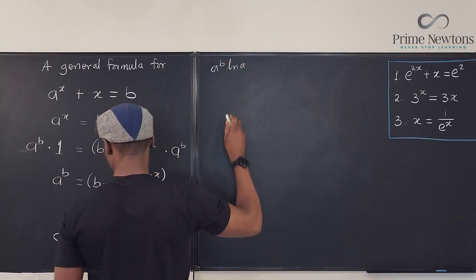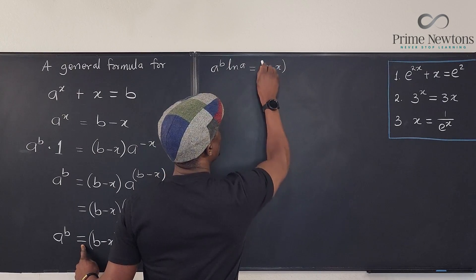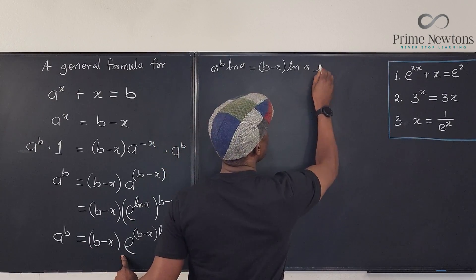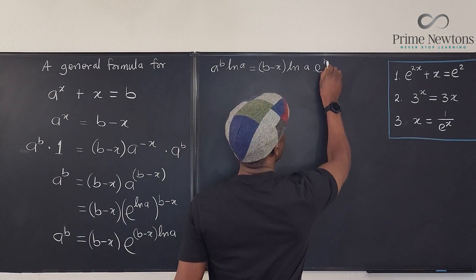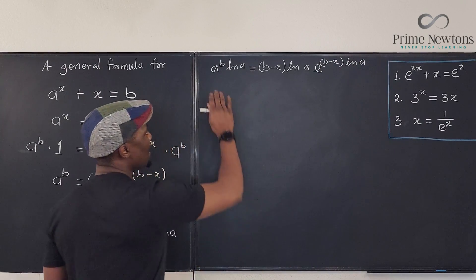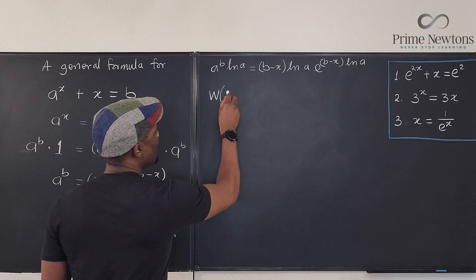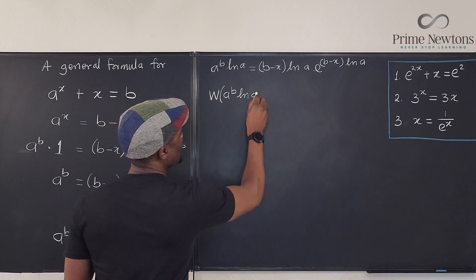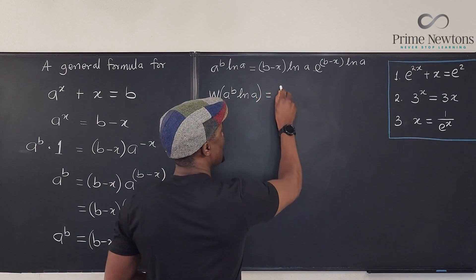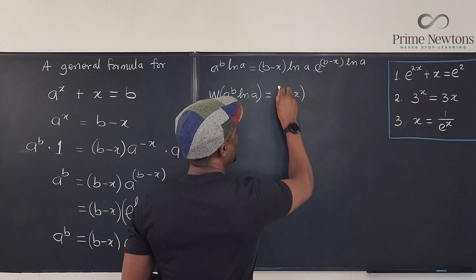ln of a is equal to b minus x ln of a e to the b minus x ln of a. So now we can take the w of both sides. So we have the w of a to the b ln of a will now be equal to the w of this. But the w of this is going to give us back b minus x ln of a.